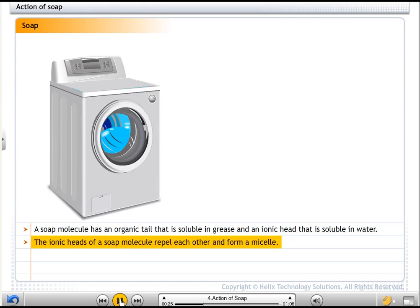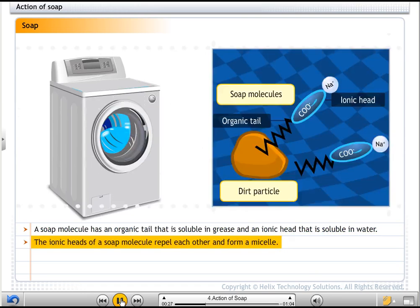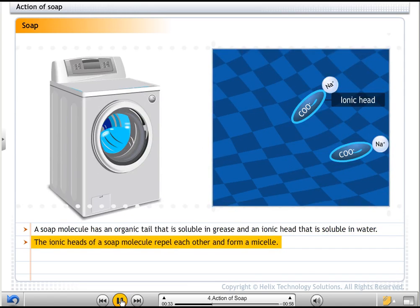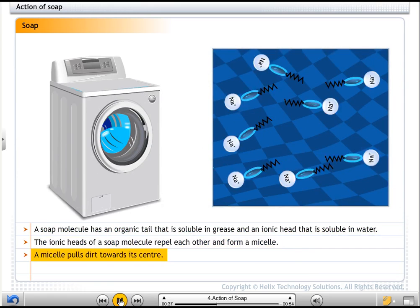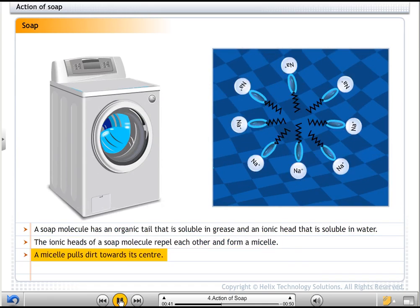When soap is added to water in which dirty clothes are soaked, the organic tail of a soap molecule dissolves in the dirt and the ionic head dissolves in water. The positively charged heads of the soap molecules repel each other and form a closed structure called a micelle.